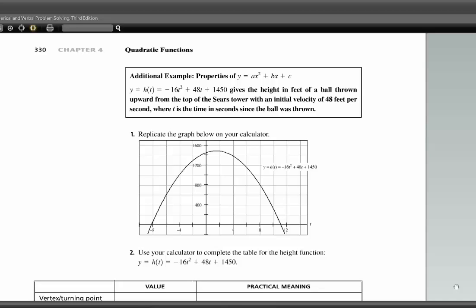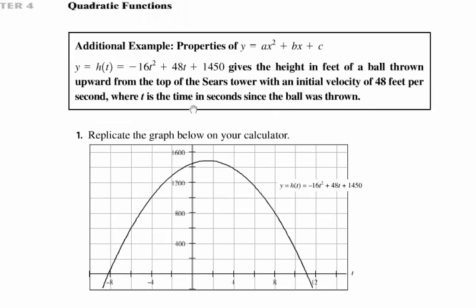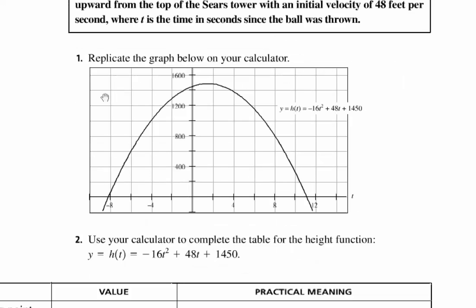Hello class. This is the second video for activity 4.2. If you recall in the last video we had graphed this parabola that modeled the position of a ball that was thrown from the top of the Sears Tower. This time we gave it an initial velocity and then the ball came down and we discussed the axis of symmetry and turning point.